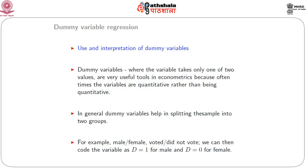Previously, in the module titled 'Regression with Dummy Variables 1', we introduced a dummy variable into our regression model and looked at how the interpretation changes when one or more predictor variables are categorical instead of continuous. In this module, we will discuss how to introduce a dummy variable with multiple categories and also look at the interpretations of interaction terms between a continuous predictor variable and a dummy variable.